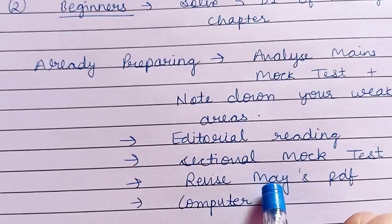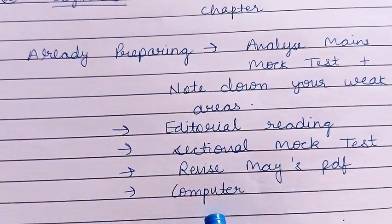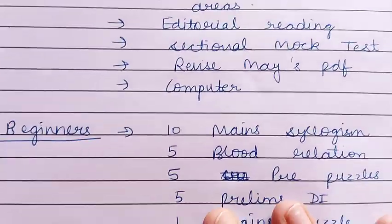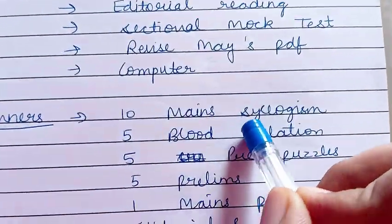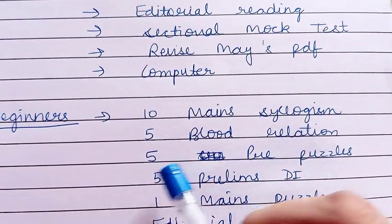Then you will do computer. For the beginners, there are 10 mains syllogism questions, then there are 5 blood relation questions, five prelims level puzzles, five prelims level DI's.